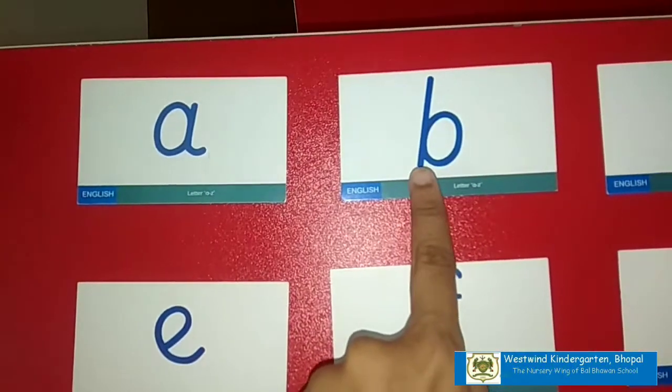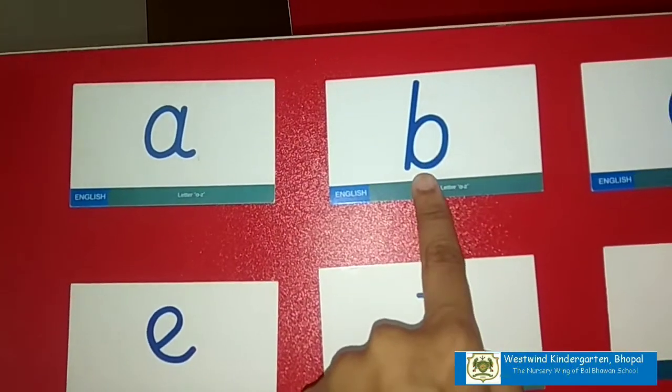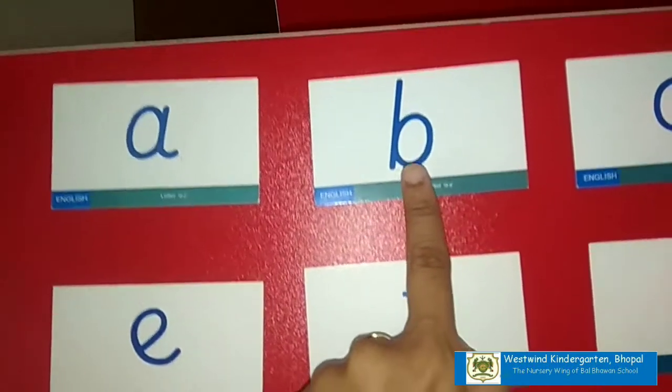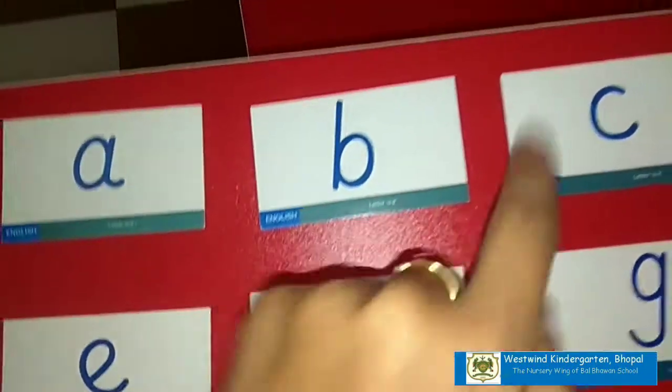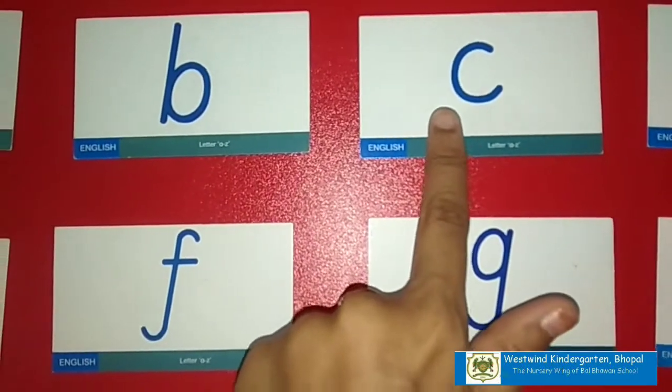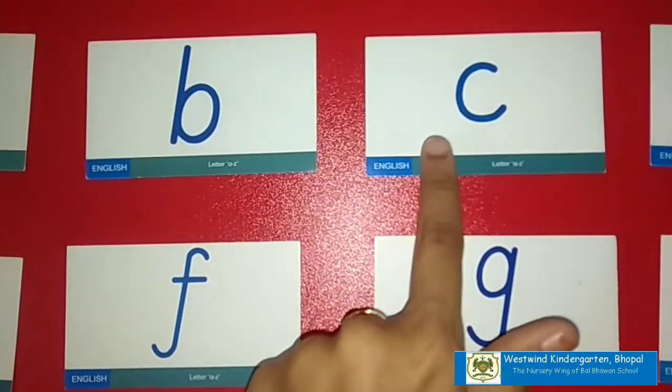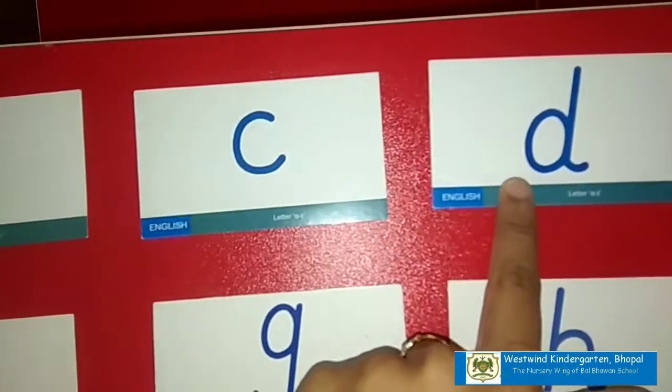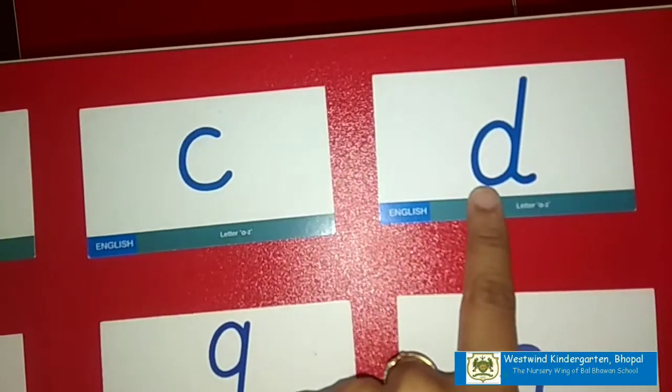Next, B. The sound is B. Next, we have C. The sound is K. Then D. The sound is D.